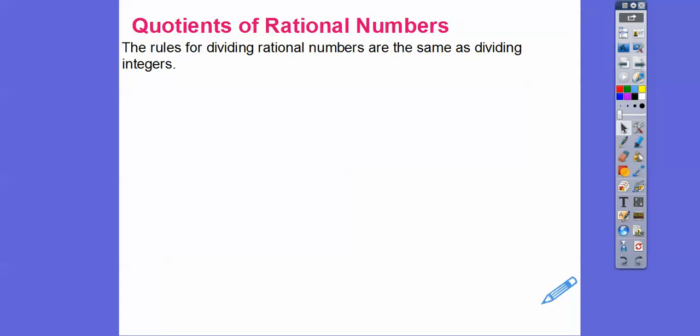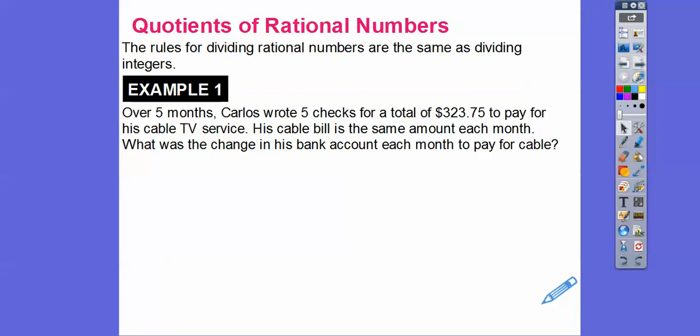The rules for dividing rational numbers are the same as for dividing integers: if the signs are the same, it's positive; if the signs are opposites, it's negative. So, over 5 months, Carlos wrote 5 checks for a total of $323.75 to pay for his cable TV service. His cable bill is the same each month. What will the change in the bank account be each month after he pays the cable bill? We're basically doing negative 323.75 divided by 5, negative because we're withdrawing money.